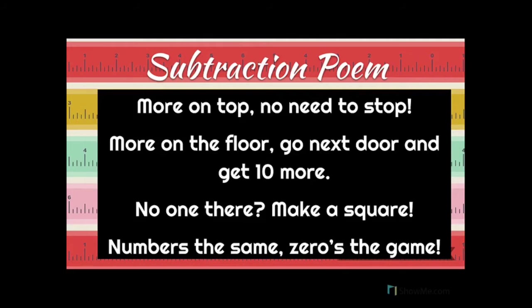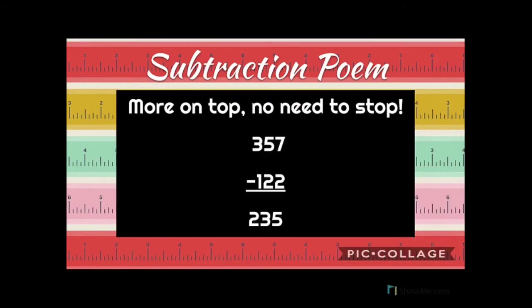So let's take a look at what each of these rules mean. The first one is "more on top, no need to stop." If you see right here in the ones place, on top I have a seven and on bottom I have a two. There's more on top, so I can go ahead and just subtract — seven minus two is five. Same in the middle: five minus two is three. And in the hundreds: three minus one is two. Those are all examples of more on top, no need to stop.